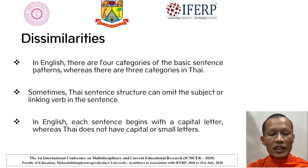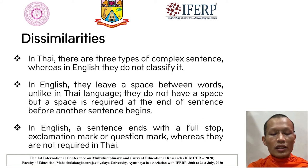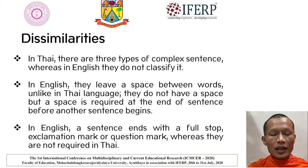In English, each sentence begins with a capital letter, whereas Thai does not have capital or small letters. In Thai, there are three types of complex sentences, whereas in English they do not classify it that way. In English, they leave a space between words, unlike in Thai language where they do not have a space, but a space is required at the end of a sentence before another sentence begins. In English, a sentence ends with a full stop, exclamation mark, or question mark, whereas they are not required in Thai.